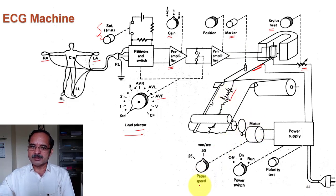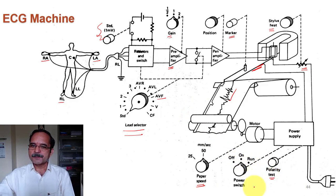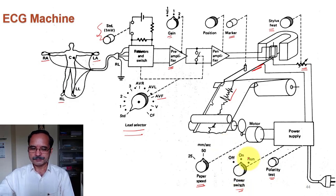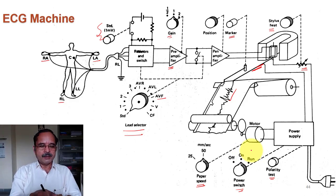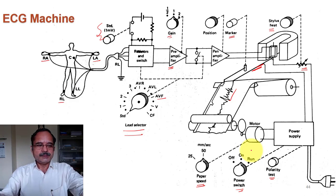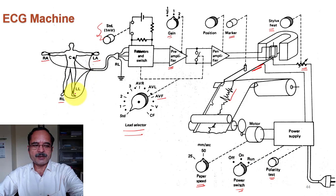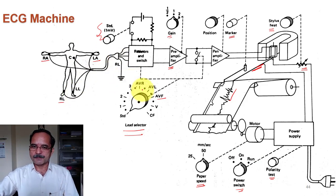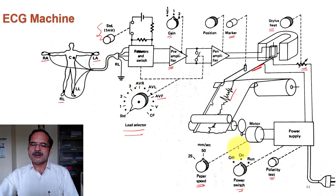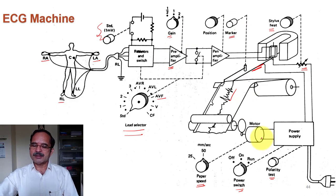There is a motor and you can adjust the paper speed. There is also a polarity test and a power switch with three positions: off, on, and run. When it is off, everything in the plotter is off. When the switch is in the on position, all circuits except the stylus are working. When in run position, actual plotting will start.